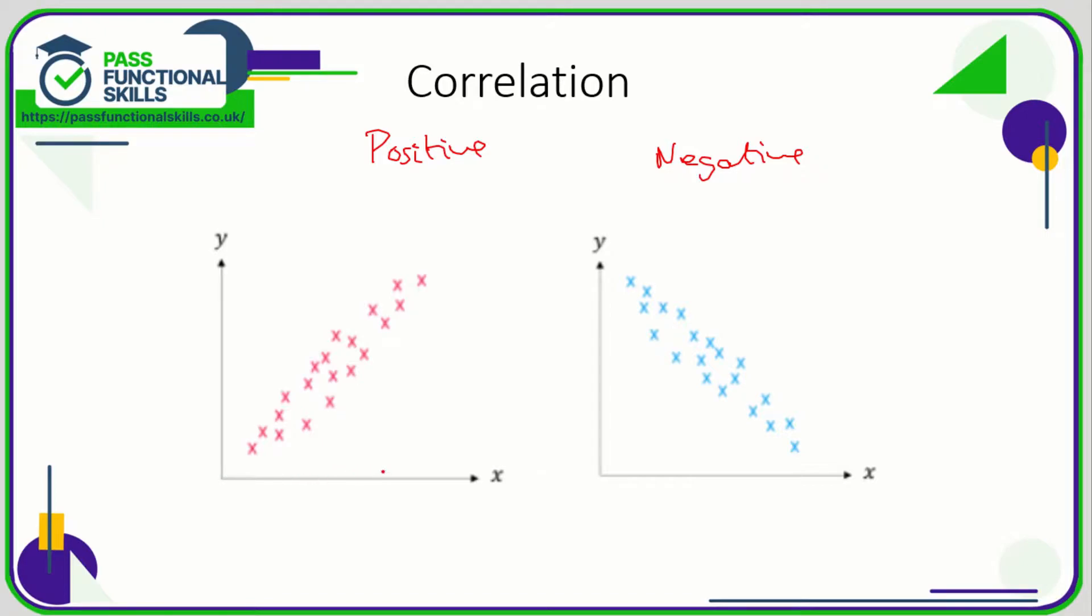There is correlation because we can draw a line of best fit through all of these dots, and all of these dots are fairly close to the line. If all of these dots are fairly close to a line, then we have correlation. If this line goes up, it's positive correlation.